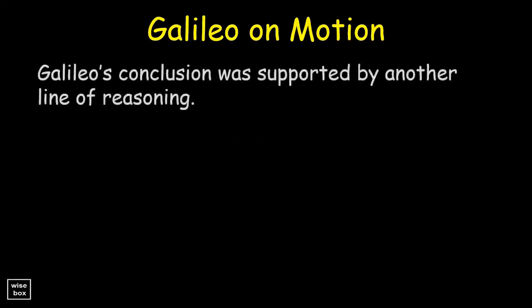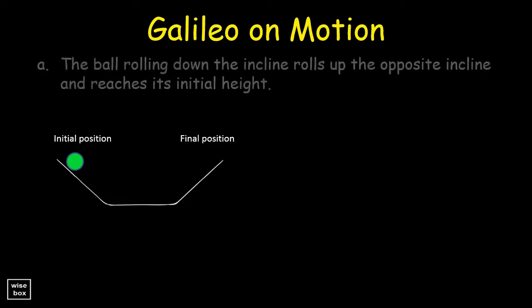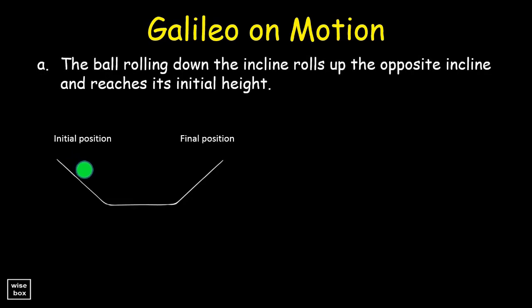Galileo's conclusion was supported by another line of reasoning. He described two inclined planes facing each other. Then a ball would be allowed to roll down from one side. Galileo stated that the ball rolling down the incline also rolls up the opposite incline and reaches its initial height.